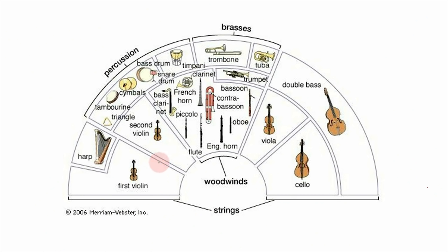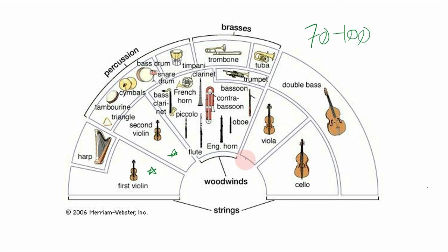This here is the typical arrangement of instruments if you went to an orchestra performance. There are usually going to be between 70 and 100 players, and about two-thirds of those are actually going to be string instruments — they make up the largest bulk of the orchestra. The string instruments are: first violin, second violin — basically the same instrument split into two parts — then viola, cello, and double bass.